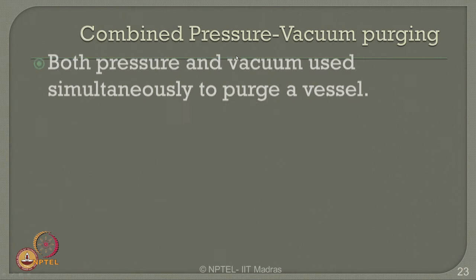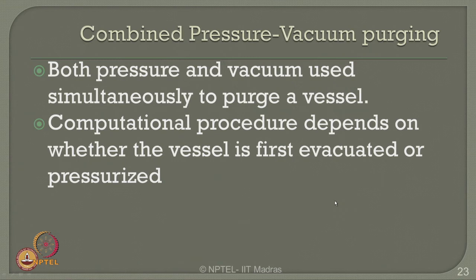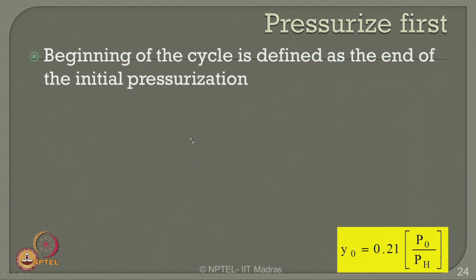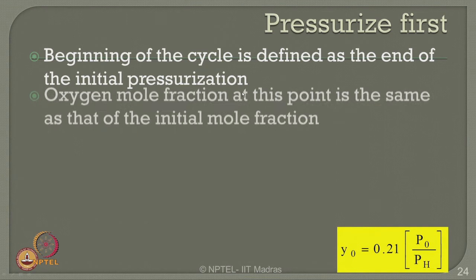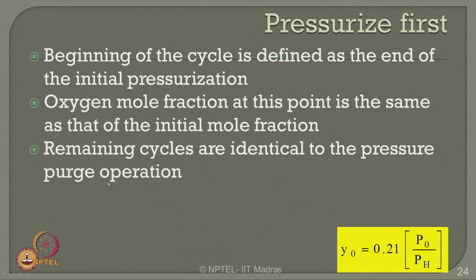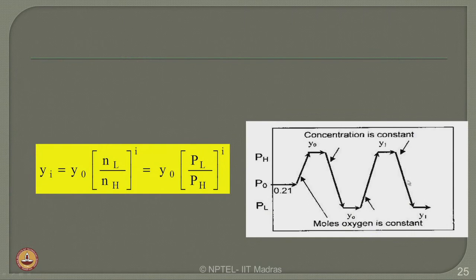The oxidant concentration for the i-th cycle, Y_i, is given by the ratio of P_L to P_H for I cycles multiplied by the initial value Y naught. One can also do combined pressure and vacuum purging. Both pressure and vacuum purging are used simultaneously to purge a vessel. The purging procedure depends on whether the vessel is first evacuated or pressurized. If pressurizing first, the beginning of the cycle is defined as the end of the initial pressurization, and Y naught is 0.21 times oxygen with P0 and P_H known.